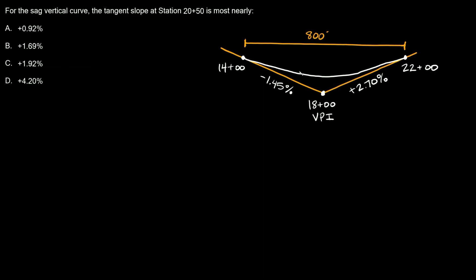As you can see here, we have a SAG vertical curve. The curve starts at 1400 or 14+00 and ends at 2200 or 22+00. And we're trying to find what the slope of this curve is approximately about here. So that's about station 2050.